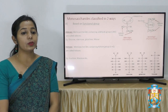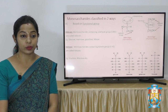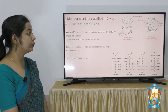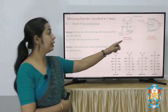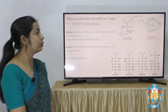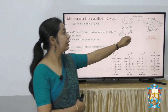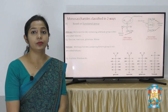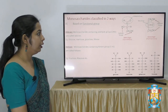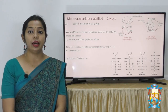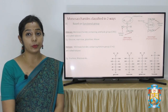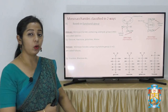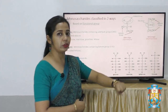Ketoses are monosaccharides containing a ketone group. Examples are fructose and ribulose. Dihydroxyacetone is a ketose sugar, and as you can see, the ketone group is present at the second position. In monosaccharides, the aldehyde group is always present at the first position and the ketone group is always present at the second position.